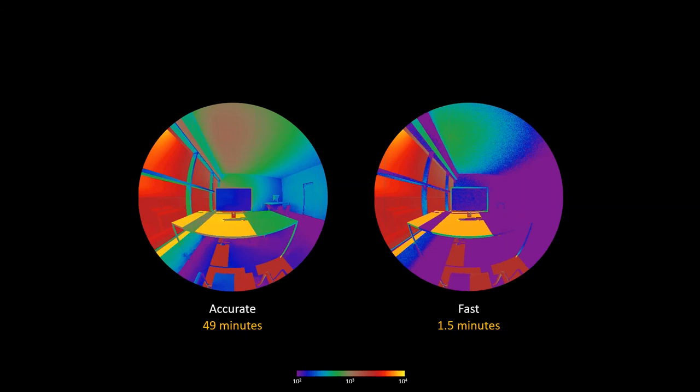One drawback of simulation is the trade-off between speed and accuracy. One image comes from an accurate simulation that ran in about 49 minutes; the other from a fast simulation that ran in under two minutes. As you can see from all the purple in the faster image, it predicted a very dim scene. If we used that information in design, we might conclude that windows were too small and need to be made bigger, exposing ourselves to solar overheating or glare.